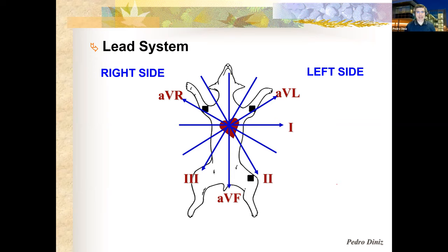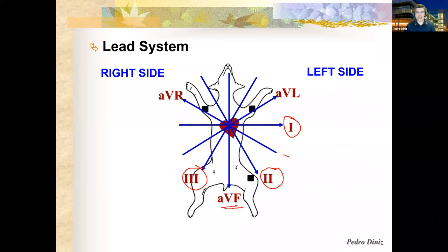Here's a little hack to remember the lead positions: draw Lead I first — right shoulder to left shoulder — then skip one, Lead II, skip one, Lead III. The one pointing toward the foot is AVF. That leaves two: the one going to the right is AVR and the one pointing to the left is AVL.